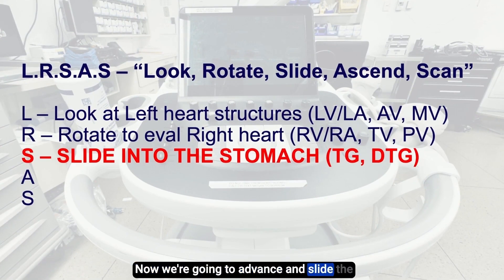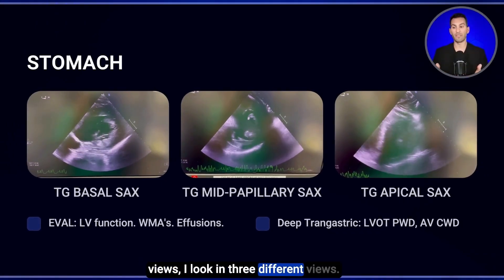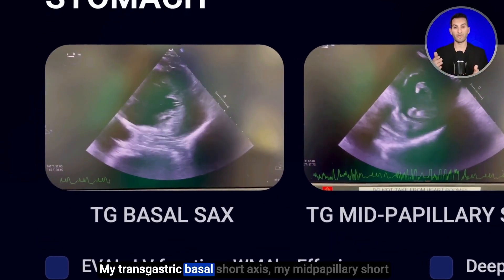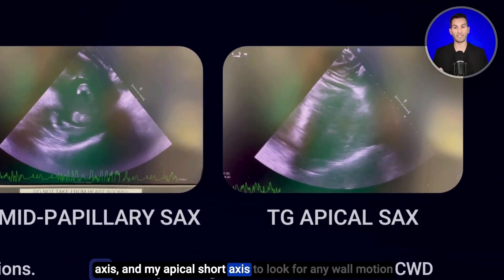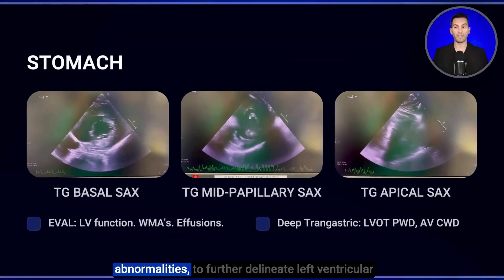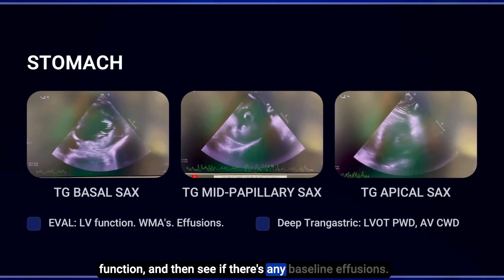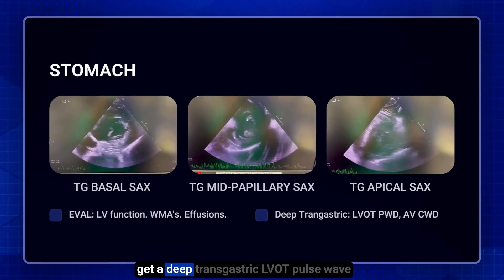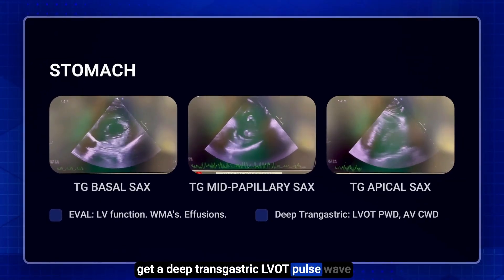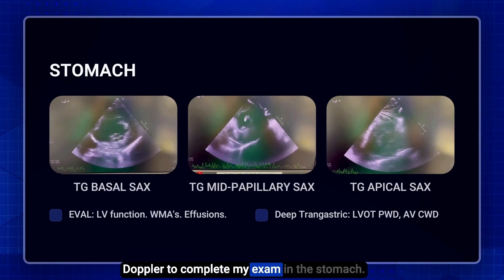Now we're going to advance and slide the probe into the stomach for our stomach views. While obtaining transgastric views, I look in three different views: my transgastric basal short axis, my mid-papillary short axis, and my apical short axis, to look for wall motion abnormalities to further delineate left ventricular function and check for baseline effusions. I'll also advance further and get a deep transgastric LVOT pulse wave Doppler and aortic valve continuous wave Doppler to complete my exam in the stomach.